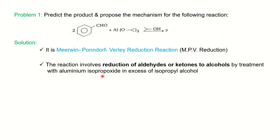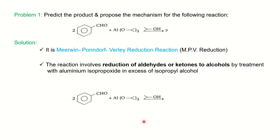In the MPV reaction, the reduction of an aldehyde or ketone takes place to give alcohols by treatment with Aluminium Isopropoxide in excess Isopropyl Alcohol. So if Isopropyl Alcohol and Aluminium Isopropoxide are present along with the carbonyl group, you can consider it the MPV Reduction Reaction, and the carbonyl is reduced to an alcohol. The product here is benzyl alcohol — benzaldehyde converts into benzyl alcohol.